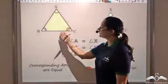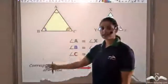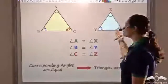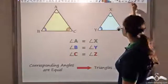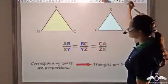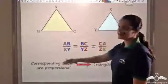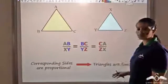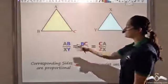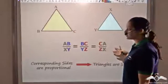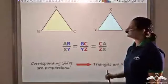We have seen that in two triangles, if the corresponding angles are equal, it is sufficient to prove similarity of these two triangles. Similarly, if the corresponding sides are proportional, it is again sufficient to say that the triangles would be similar. So if I have two triangles with corresponding sides proportional, I can say that these two triangles will be similar.